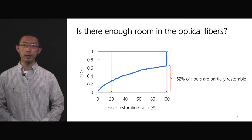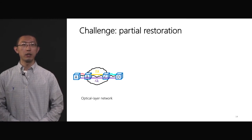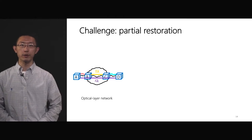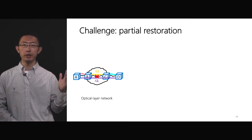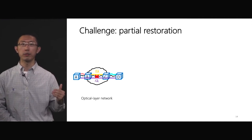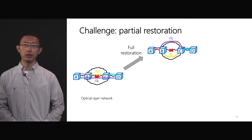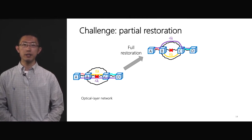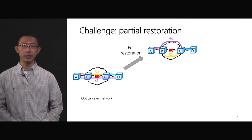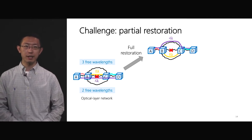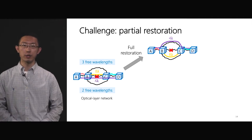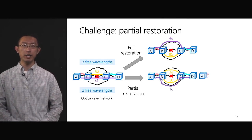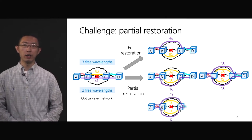It shows that 62% of fibers are only partially restorable. How does this partial restoration affect our goal of reconfiguring the failed wavelengths from broken fiber to healthy fibers? If lost wavelengths can be fully restored, then the only decision is to reconfigure all wavelengths to revive the entire IP layer capacity — the decision is simple. But since a majority of fibers are only partially restorable, we cannot restore all lost wavelengths, and we have to be intelligent when deciding which IP link to restore, or equivalently, which wavelengths to reconfigure.